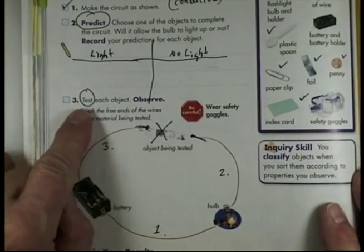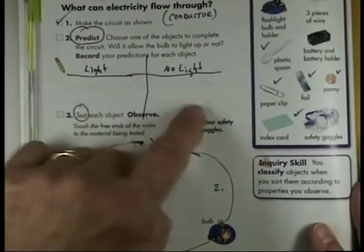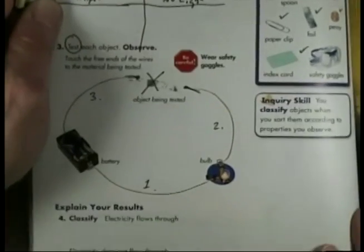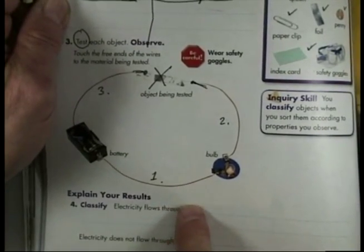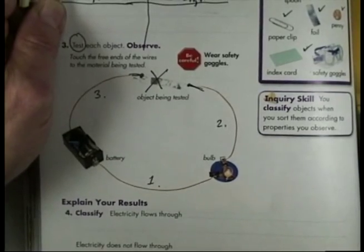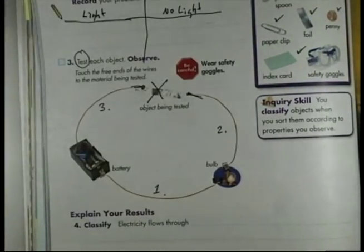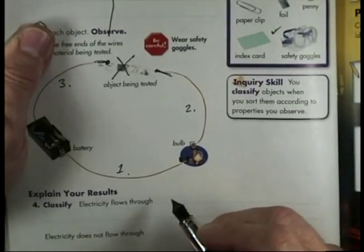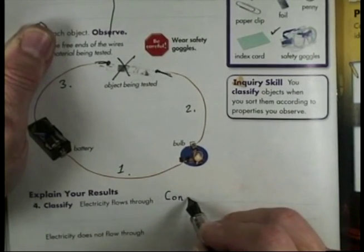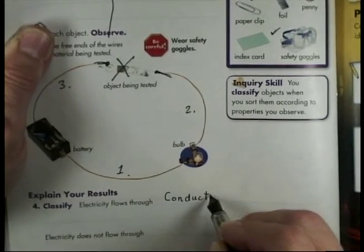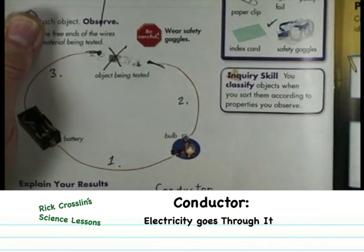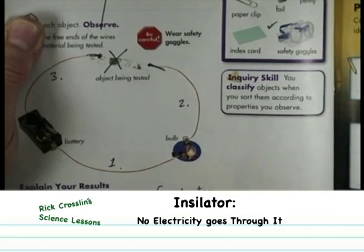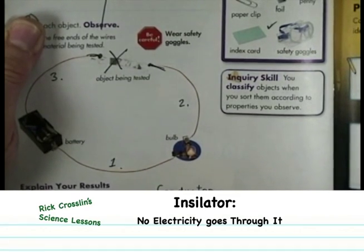And then three, we test them. So you make a prediction first and then you test it. So I want you, just for a second, the last thing you do is you classify down here which things the object flows through. Oh, by the way, there's a name for that. And every kid in this grade level better know that. If electricity flows through it, that means it's a good conductor. And if electricity does not flow through it, it is an insulator.